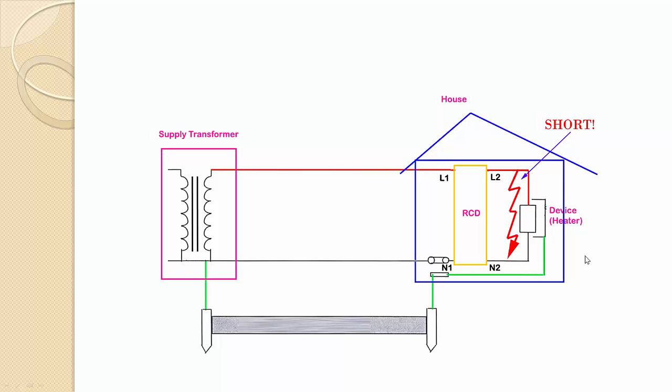However, here comes one shortcoming of RCD. What happens if there is a short circuit between the line and neutral? A short circuit is actually a direct connection between line and neutral. As you can imagine, RCD doesn't offer any protection in this case because in the case of a short circuit, the line and neutral currents are still the same, and so RCD has no reason to trip.